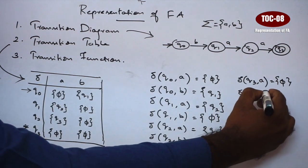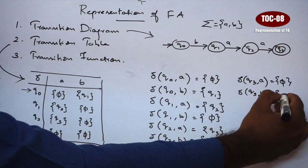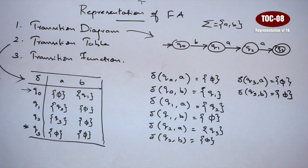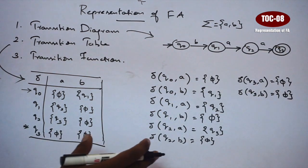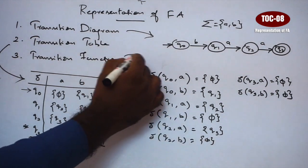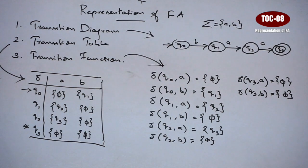Next, Q3 on B — equals null. So in this way we have represented all of the transition functions.